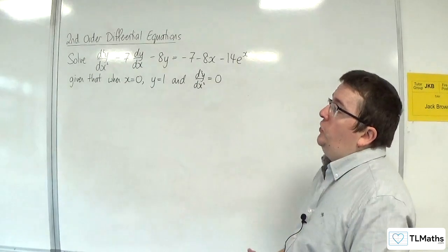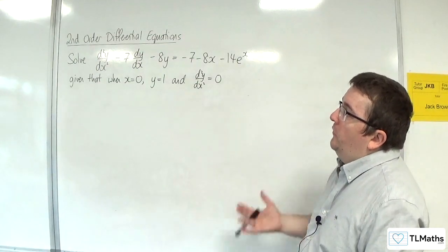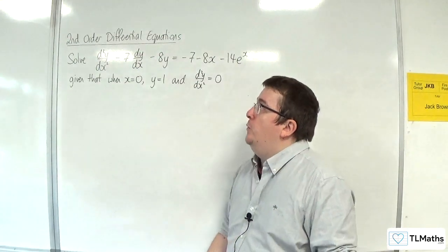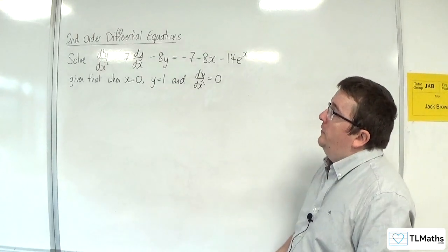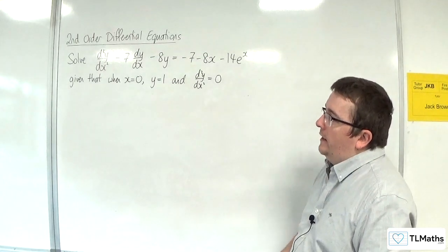In this video, I'm going to solve d²y/dx² - 7dy/dx - 8y = -7 - 8x - 14e^x.